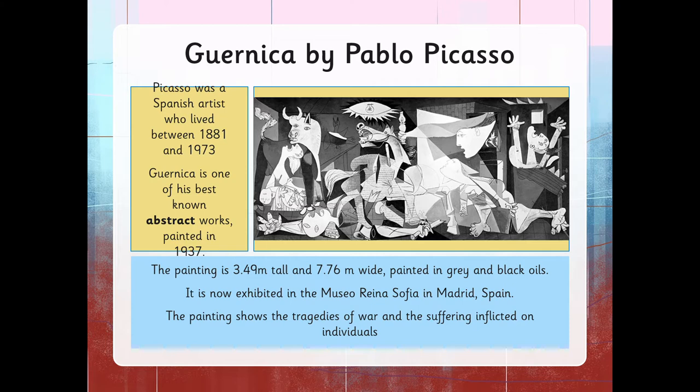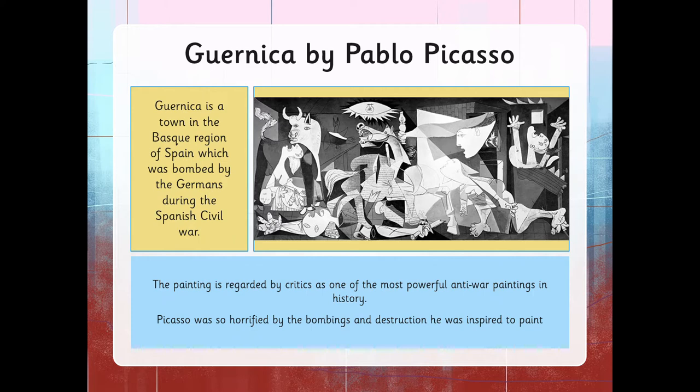It was painted in grey and black oils. It is now exhibited in the Museo Reina Sofia in Madrid, Spain. The painting shows the tragedies of war and the suffering inflicted on individuals during wartime. Guernica is a town in the Basque region of Spain which was bombed by the Germans during the Spanish Civil War. The painting is regarded by critics as one of the most powerful anti-war paintings in history. Picasso was so horrified by the bombings and destruction he was inspired to paint.